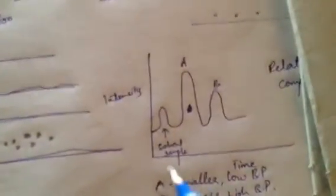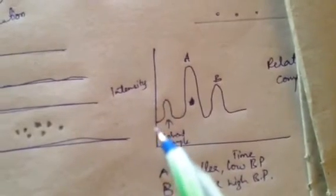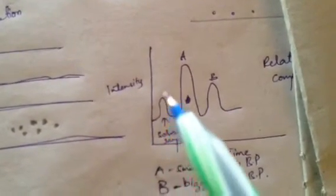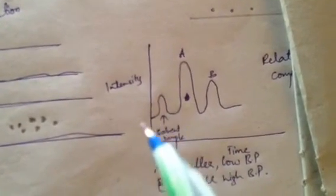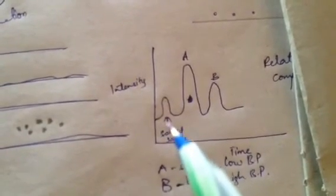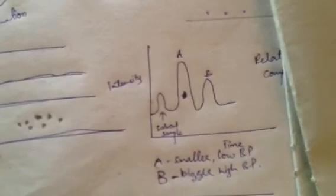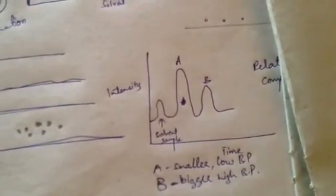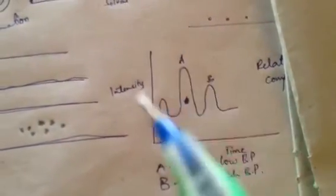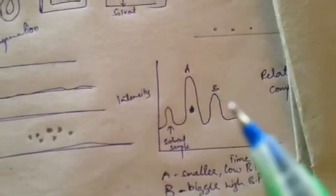Let us consider the graph over here. First, initially what we get in the detector - in the recorder - is the solvent sample which is a mixture, so it cannot be considered. When a graph of intensity and time is plotted, here we have sample A and here we have sample B.